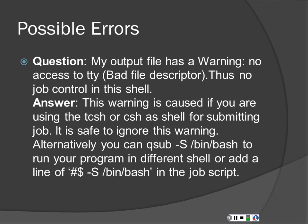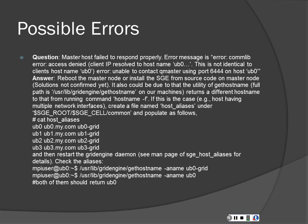Possible errors. First: your output file has a warning — no access to TTY. If you can't access your terminal, that's a problem. This warning is caused if you're running in the tcsh or csh shell, so since we're going to be working in bash, make sure you're working in /bin/sh or /bin/bash. Another error: master host failed to respond properly — comlib error, access denied. This can be helped by making an alias file in your host aliases, setting up your master and slave relationship in terms of who does what, where, why, and how. This problem is often caused by DNS being faulty — sometimes you have to force it and tell it where to go.